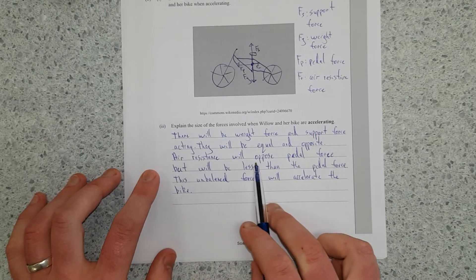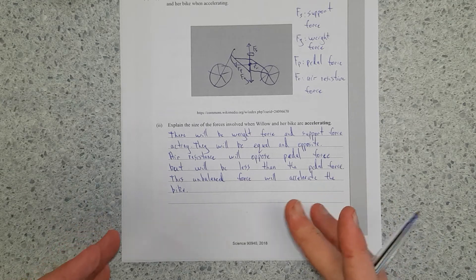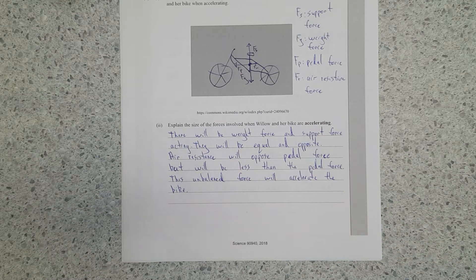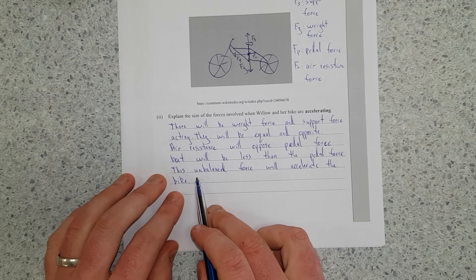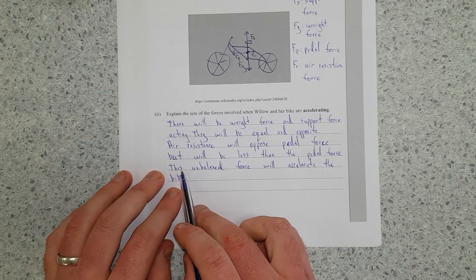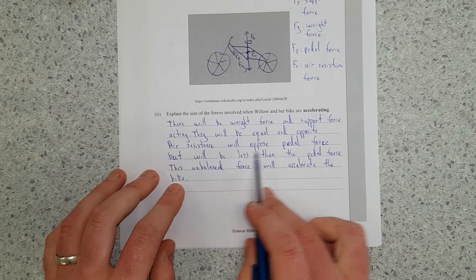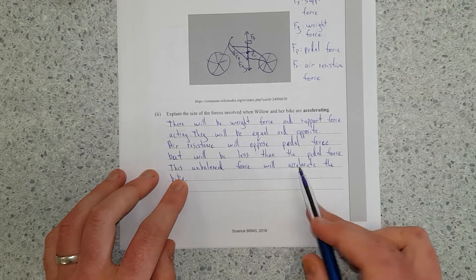Air resistance will oppose pedal force. Air resistance, by definition, always opposes the driving force. So if you have a car moving forwards, air resistance always acts opposite the driving direction of the force. But it will be less than the pedal force. Otherwise, it'll actually start decelerating, or the force would act backwards, so it would start slowing down. Or going in reverse. This unbalanced force will accelerate the bike, because the air resistance is less, which implies, by default, the pedal force is more, and that'll accelerate the bike. Sweet as.